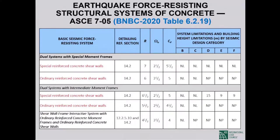A dual system with special moment frames that has special reinforced concrete shear walls yields R=7 — the highest available. If that dual system has intermediate RC shear walls, R=6. A dual system with intermediate moment frames and special RC shear walls gives R=6.5; with ordinary RC shear walls, R=5.5. However, the dual system with intermediate moment frames has restrictions on applicability.